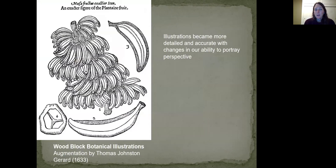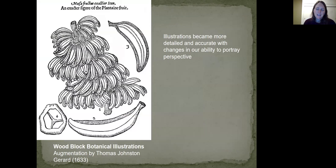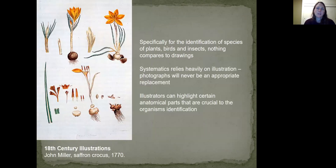And then this is a woodblock print. So now we have the capacity to reproduce illustrations through woodblock printing, and this is 1633. But again, you've got some issues with perspective on the bananas. This is all kind of the evolution of our ability to capture images. Here you can see some images from the 1700s of saffron. Illustration is specifically helpful in terms of identifying especially species of plants, birds, and insects, and really nothing compares to drawings.